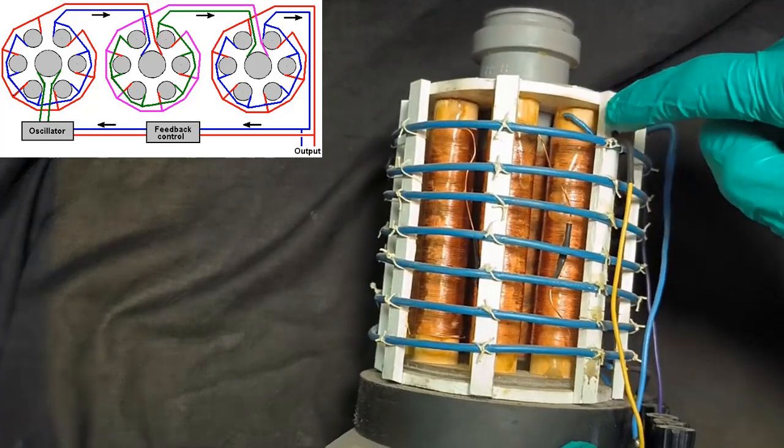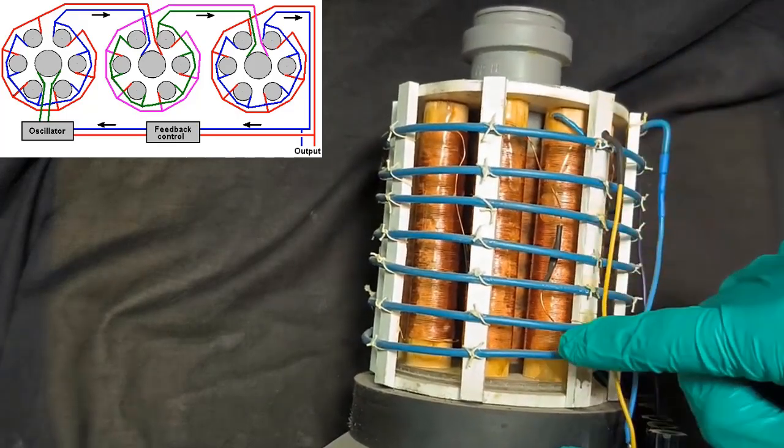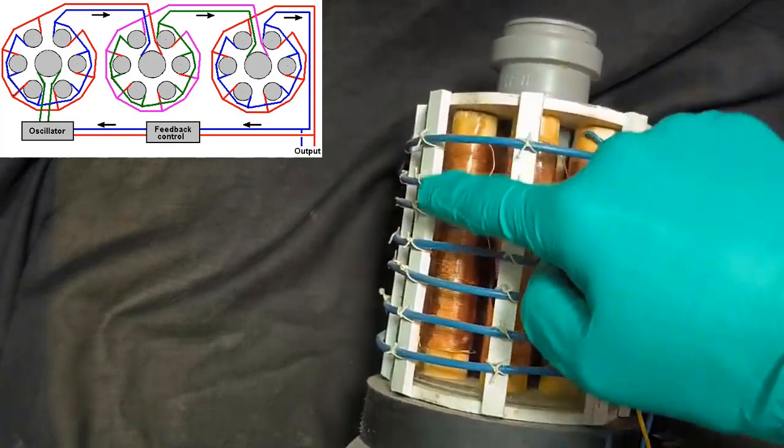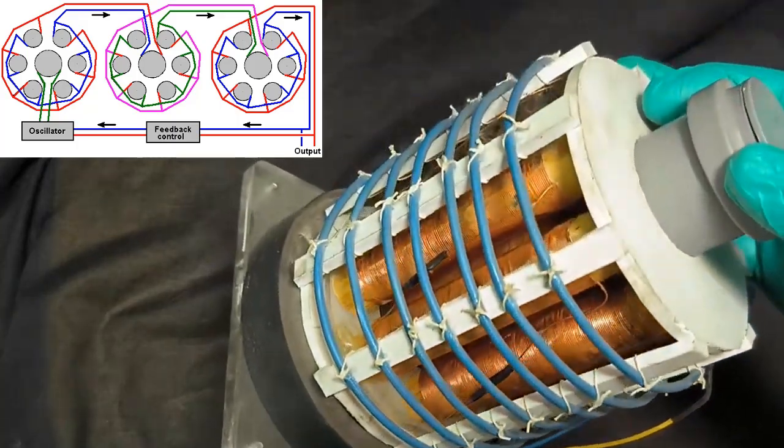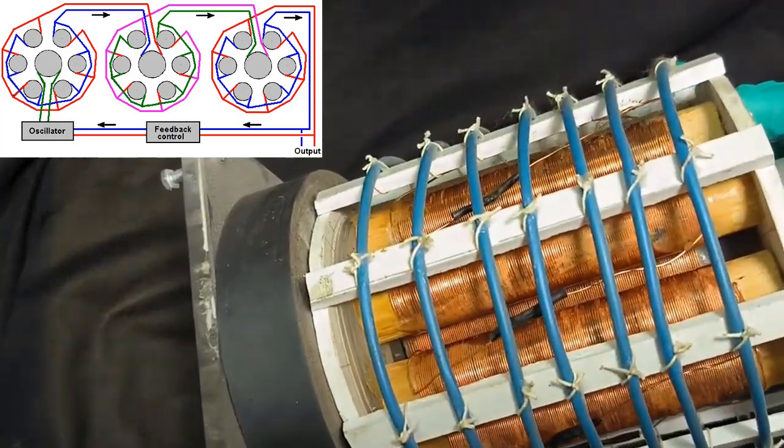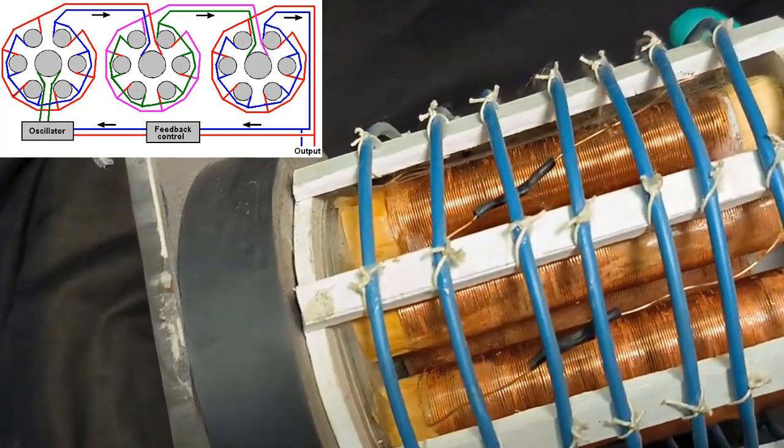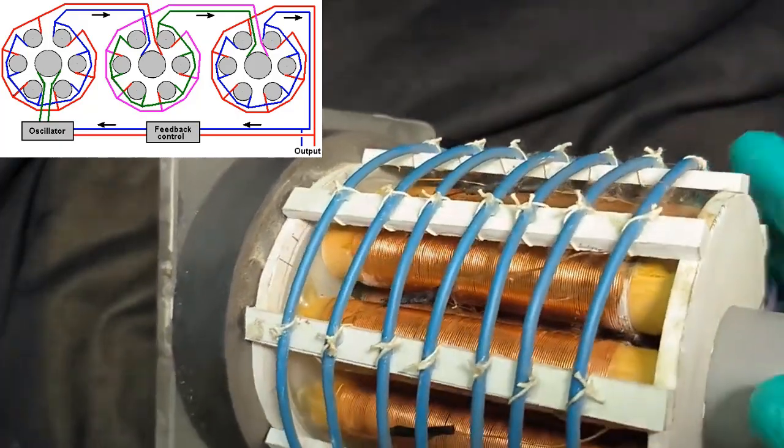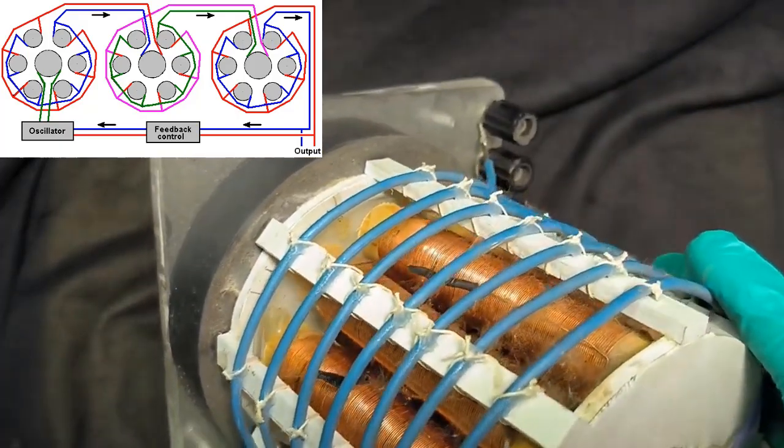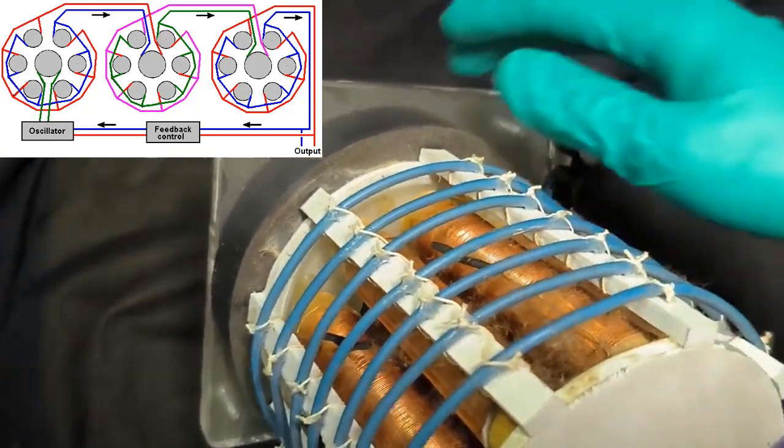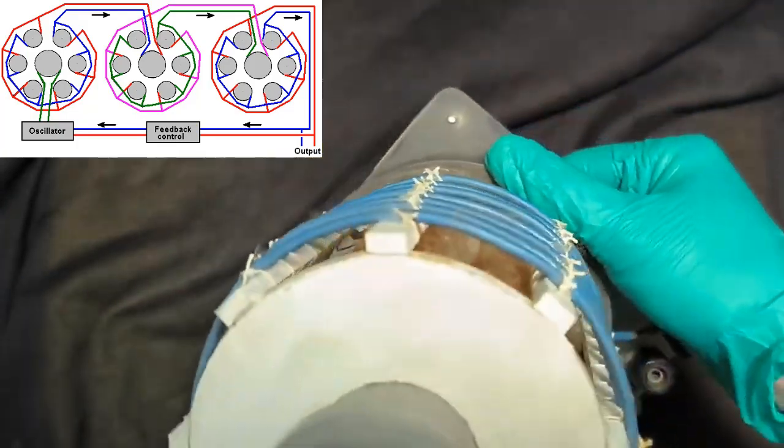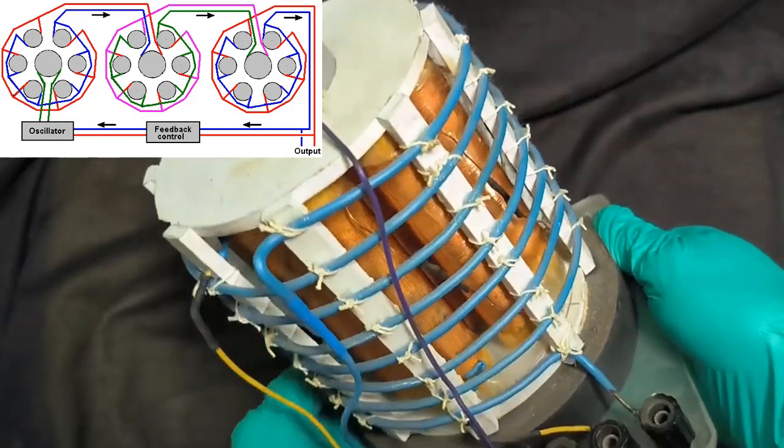Instead of amplifying voltage, as transformers typically do, Coutier's invention focuses on the amplification of current. The crux of its operation lies in the electromagnetic field generated within the transformer steel core. Remarkably, this device maintains a constant output voltage in relation to the input while increasing the current by a staggering factor of 216 times, as specified in its patent.